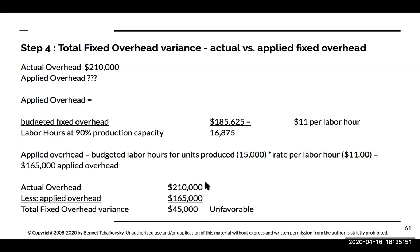My actual overhead was $210,000 and the applied overhead was $165,000. I spent more than was applied — that difference is $45,000, and that is unfavorable.